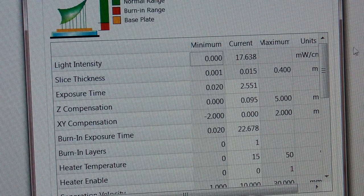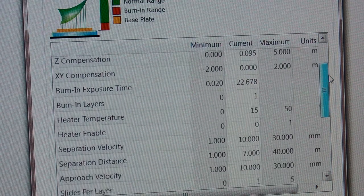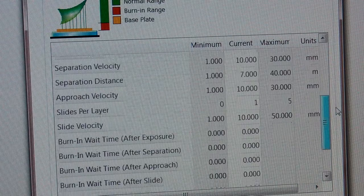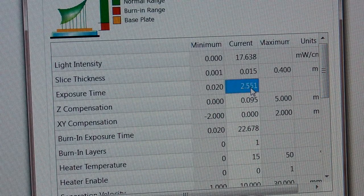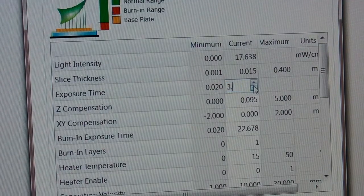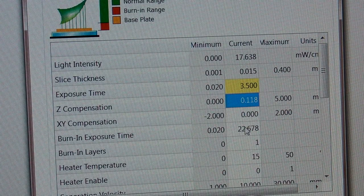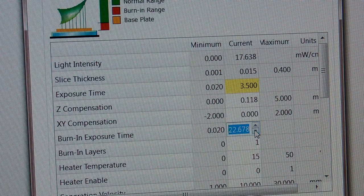Now this is where the fun starts. Composer lets you edit the default settings for each material. You can change the exposure time, the slider speed, add a wait time between layers, there's so many options to play with. This is also where you would enter custom settings for third-party materials.